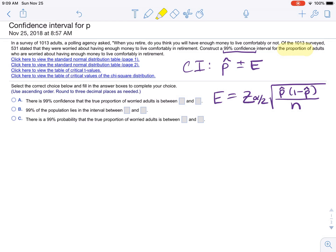And we use these formulas. P-hat plus or minus E, and the margin of error is there. So first, let's find Z alpha over 2, the critical value.